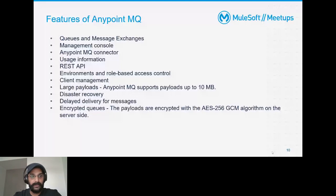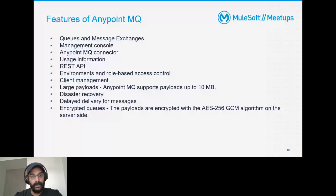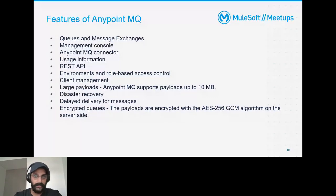A REST API is provided for Anypoint MQ. It is environment-based and role-based with access control so you can manage MQs per environment. Client management is handled via client ID and client secret to control who can access the MQs. Large payloads are supported — each message can be up to 10 MB. Disaster recovery is built in, with messaging services deployed across different availability zones within a region.